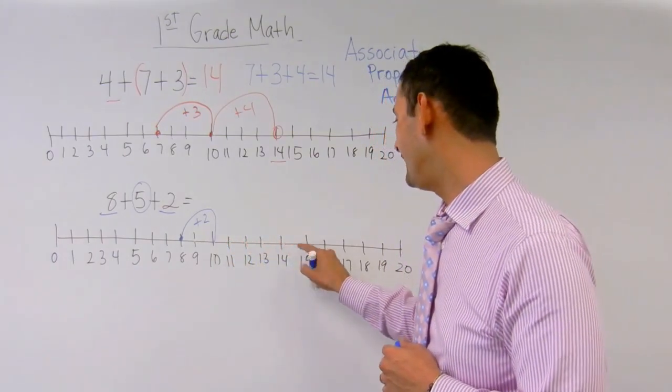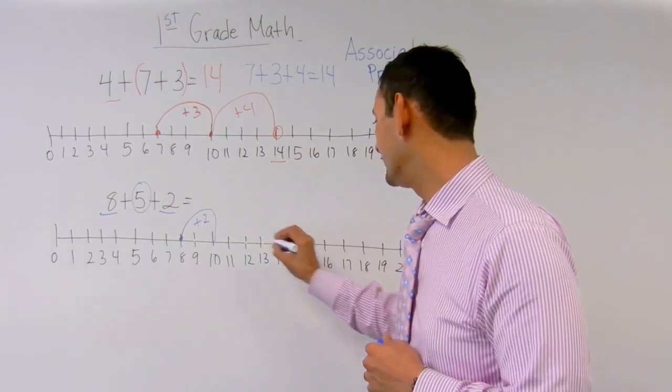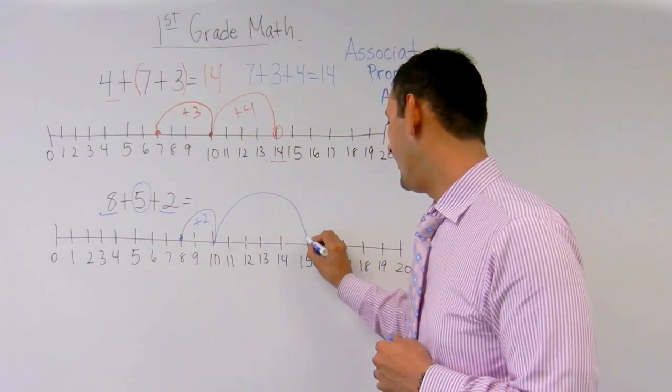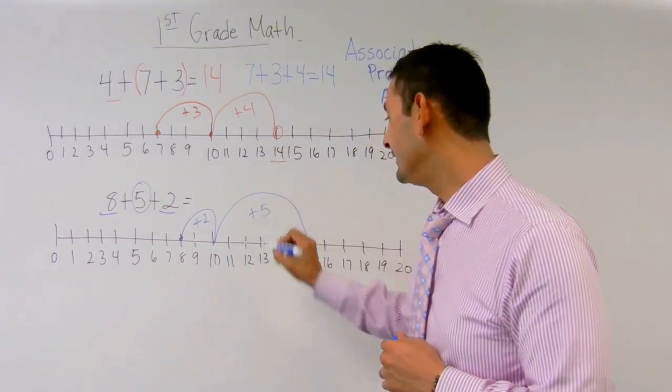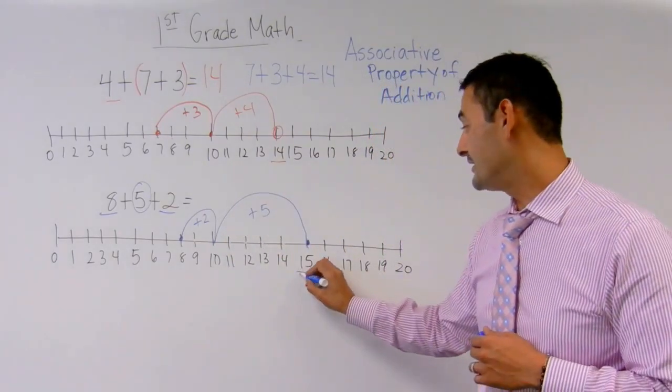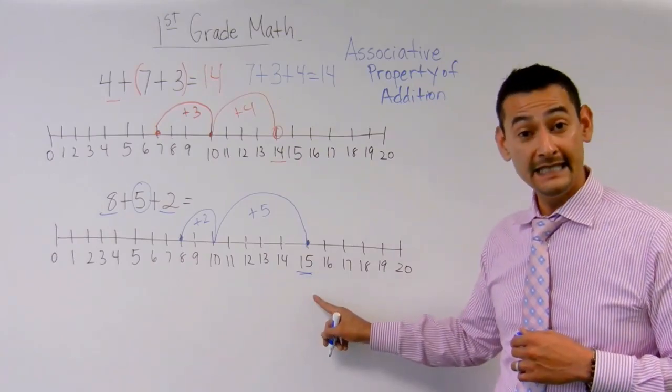1, 2, 3, 4, 5. Put my little dot there. I'm going to jump all the way to 5, plus 5. And what's the answer going to be, boys and girls? 15. That is correct.